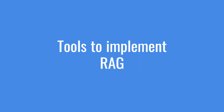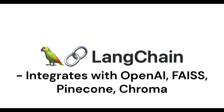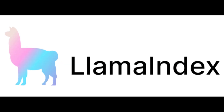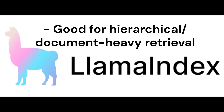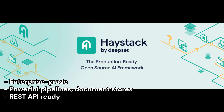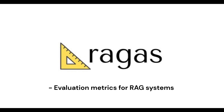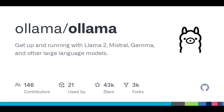Here are some popular tools to implement RAG. LangChain offers modular components and integrates with OpenAI, FAISS, Pinecone, and Chroma — great for building pipelines. Next is LlamaIndex, formerly GPT Index, which provides index-based abstraction over documents and is good for hierarchical, document-heavy retrieval. Haystack by Deepset is enterprise-grade with powerful pipelines, document stores, and REST API support. RAGAS provides evaluation metrics for RAG systems. And OLLAMA plus local embedding tools is great for local and offline RAG systems with models like Llama 3 and Mistral — which we'll prefer for our next working sessions.